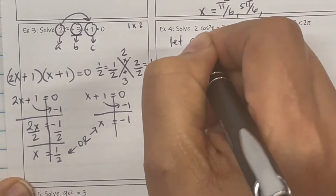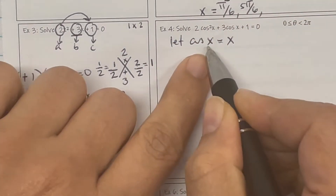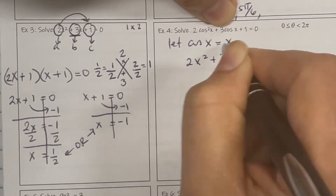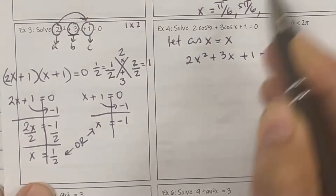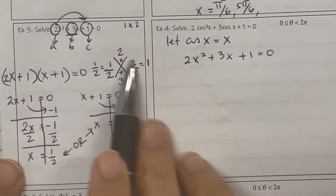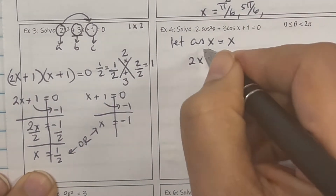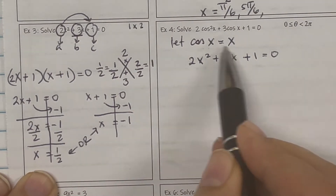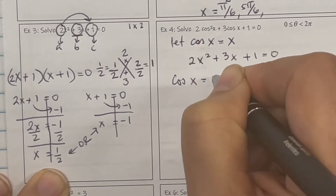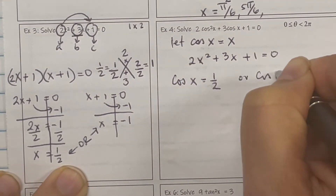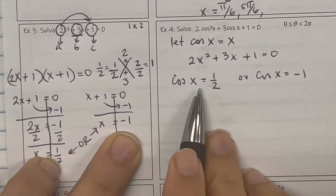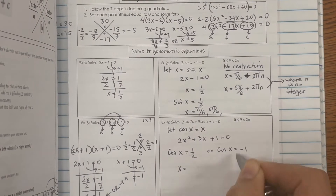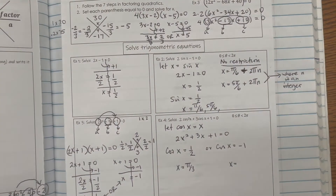Solving trig functions is the same as solving regular equations. Let's replace cosine x with x. That gives us 2x squared plus 3x plus 1 equals 0. Notice that's the one we just solved, so x equals negative 1 half or x equals negative 1, which means cosine x equals negative 1 half, or cosine x equals negative 1.